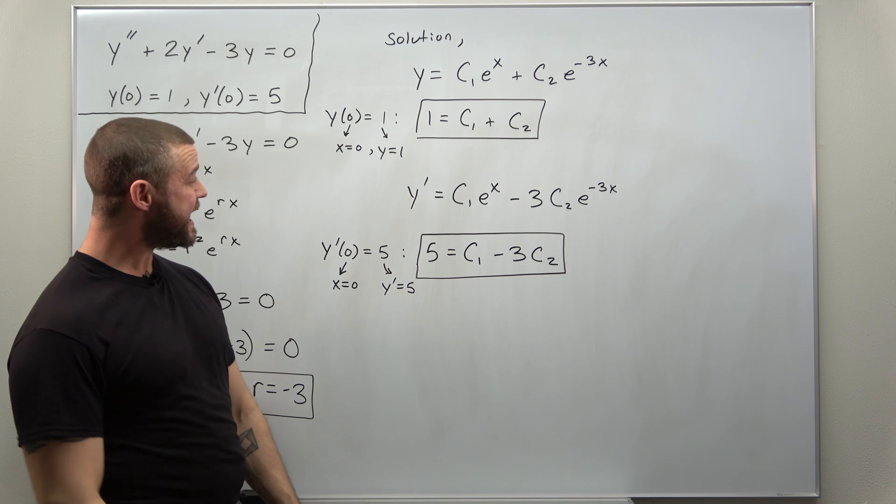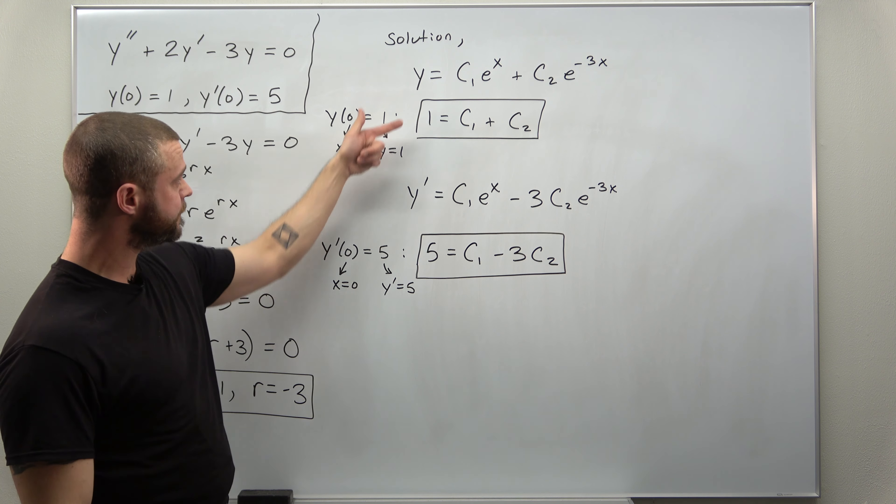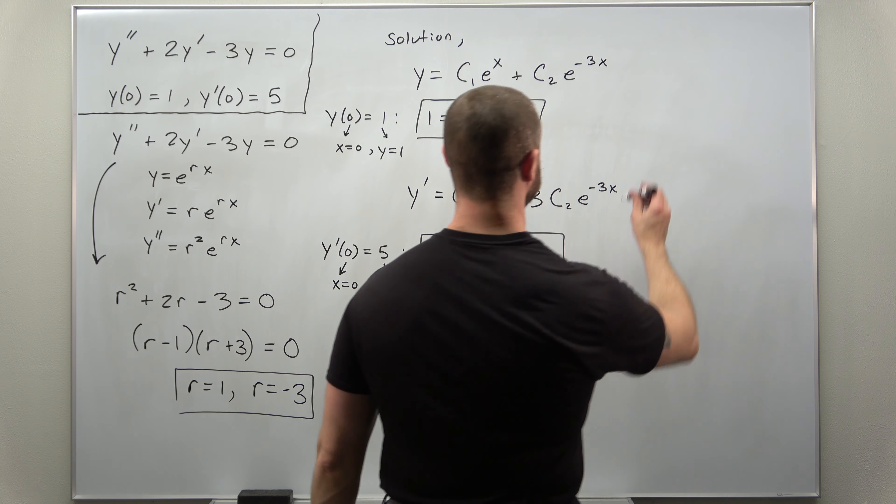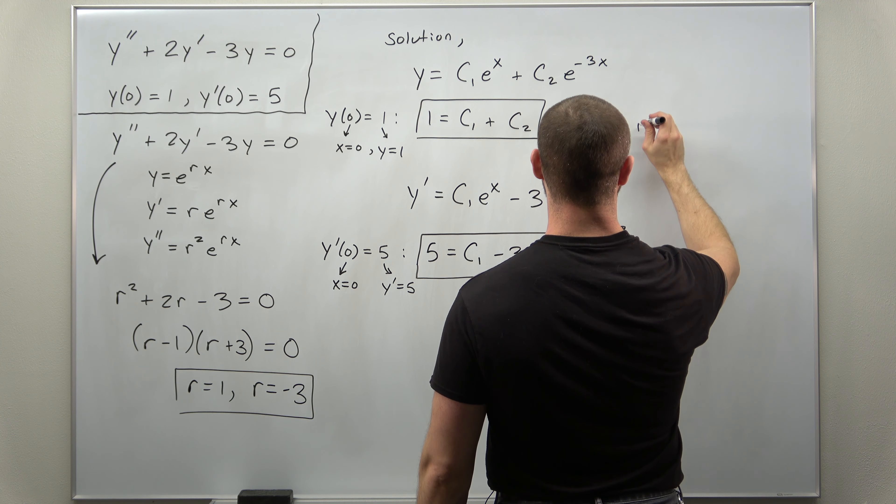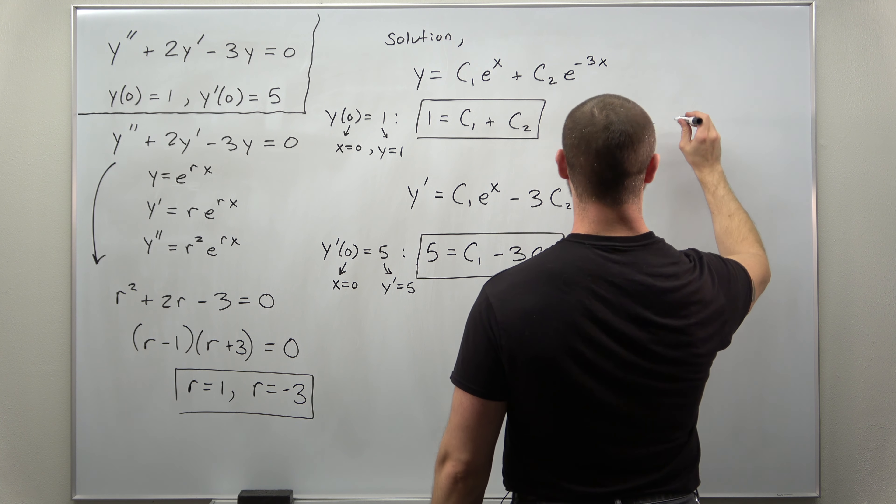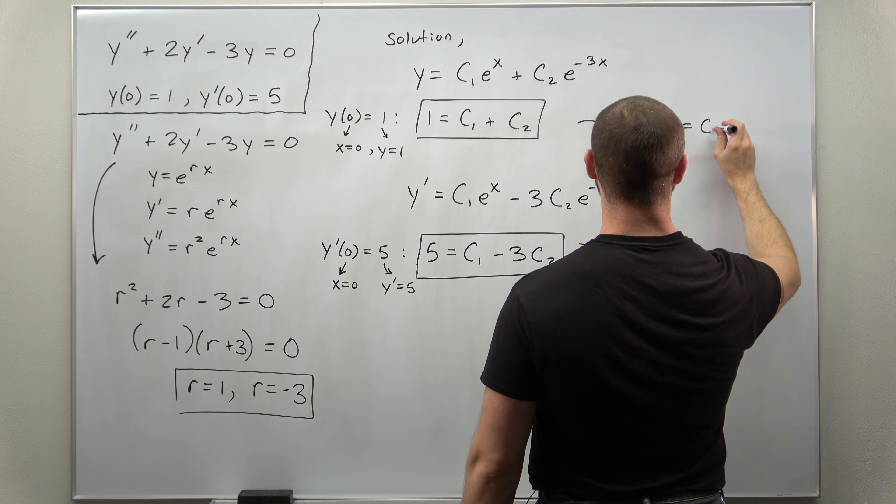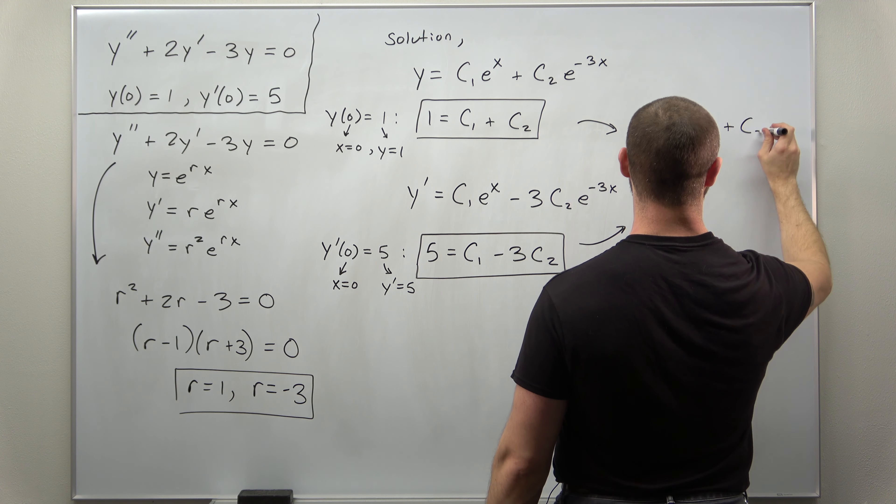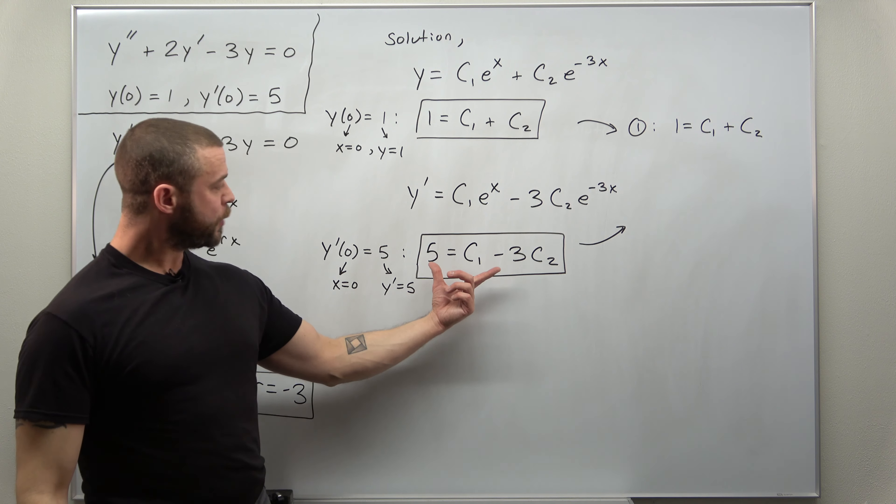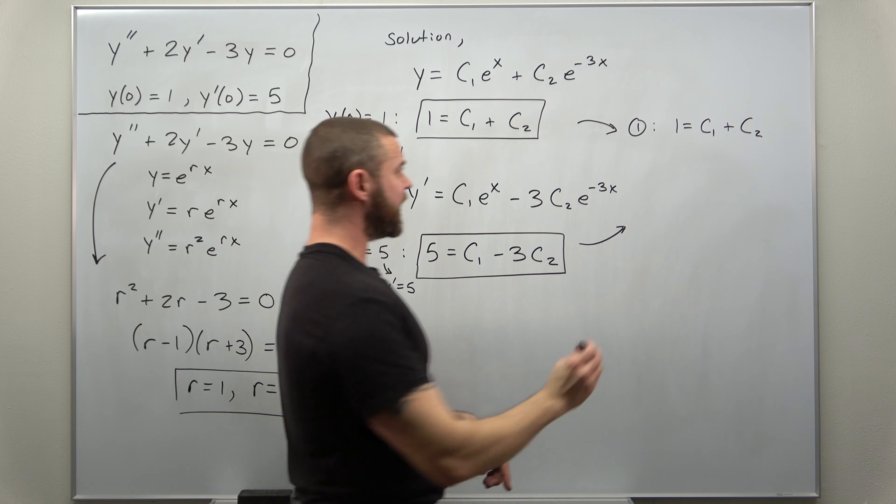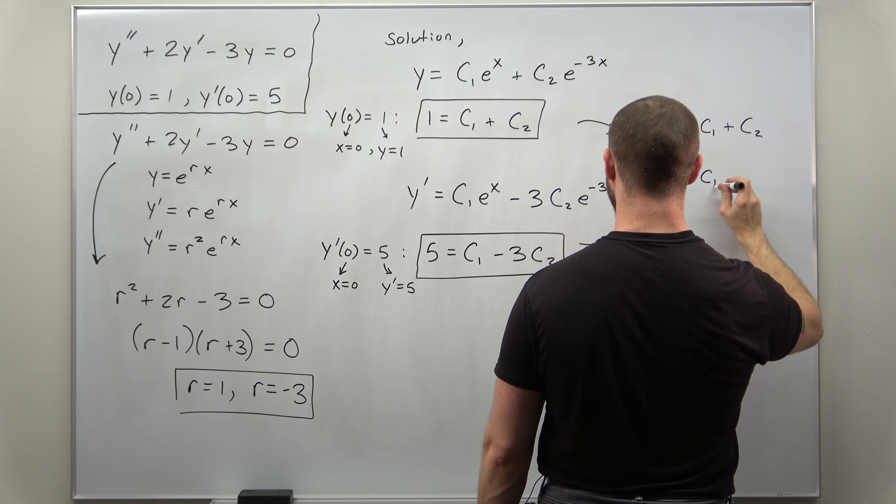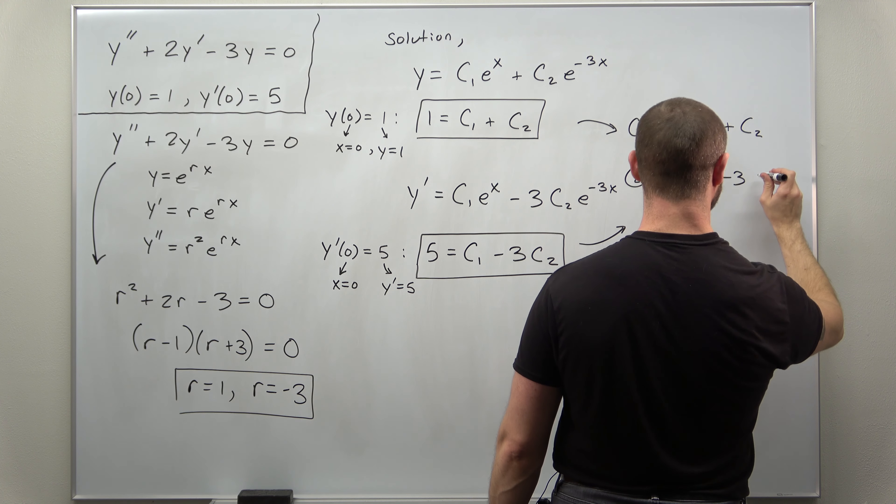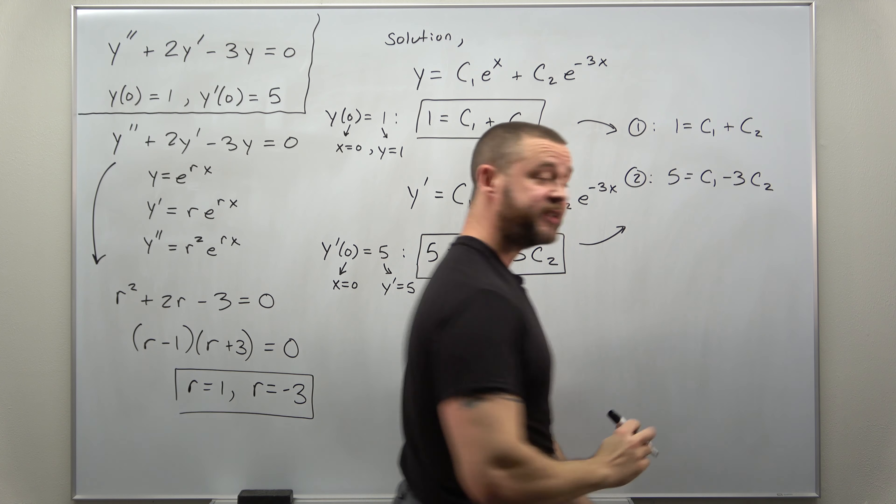And we have our two equations here. Let me just write them down. So we have equation 1, which is 1 equals c1 plus c2. And then what we'll call equation 2, 5 equals c1 minus 3 c2.